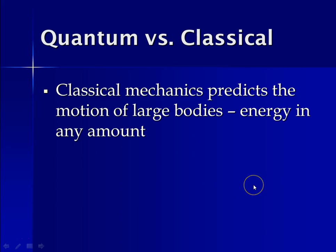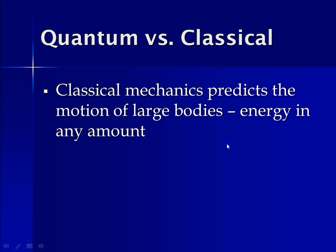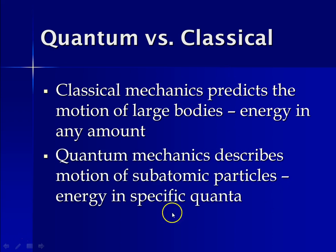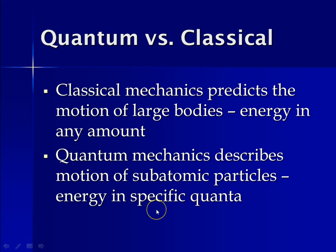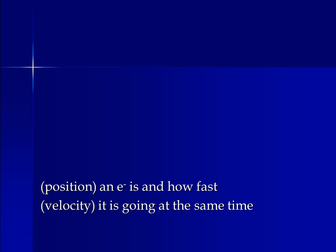Classical mechanics predicts the motion of large bodies — things like footballs and cars, which you'll learn more about in physics next year. In the quantum world, quantum mechanics describes the motion of subatomic particles, which are very, very tiny, and their energy is described as specific quanta — specific amounts of energy.